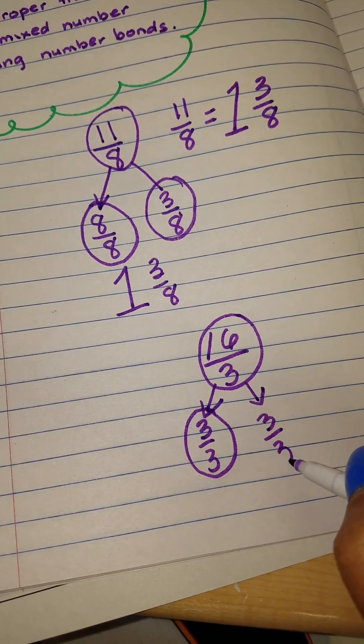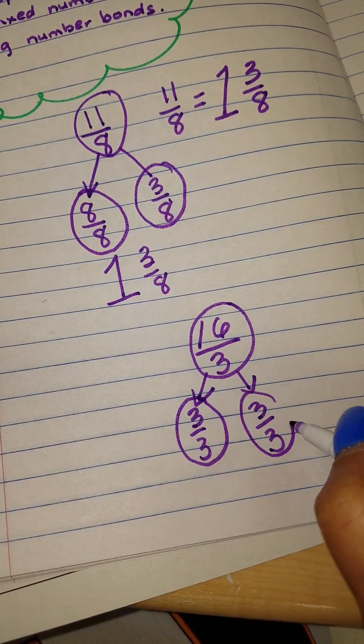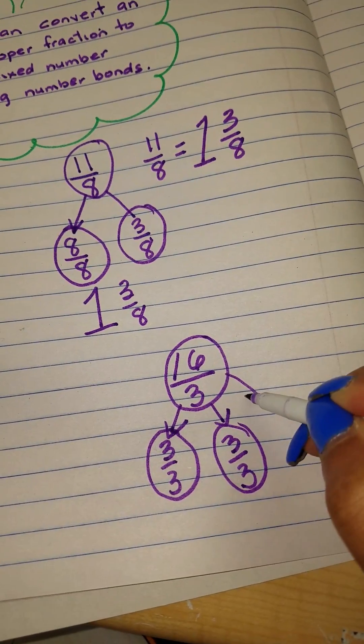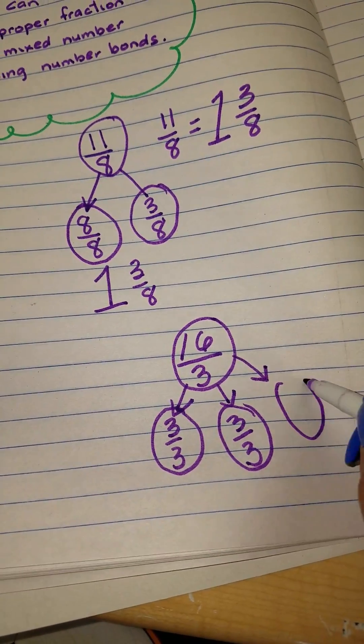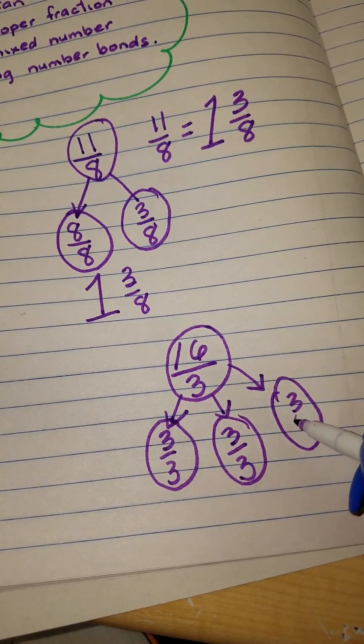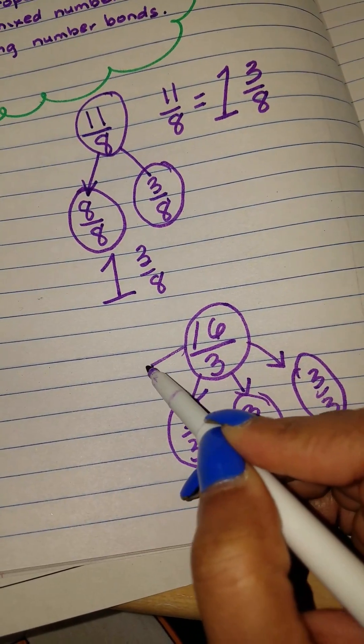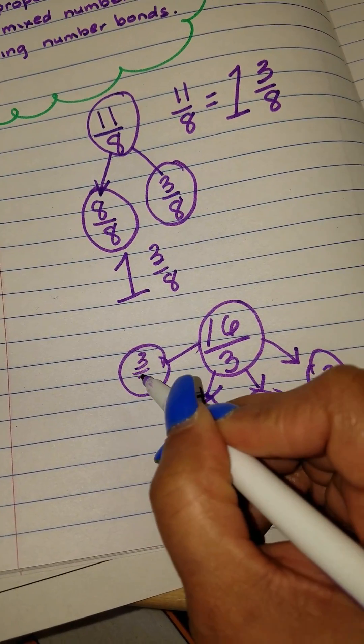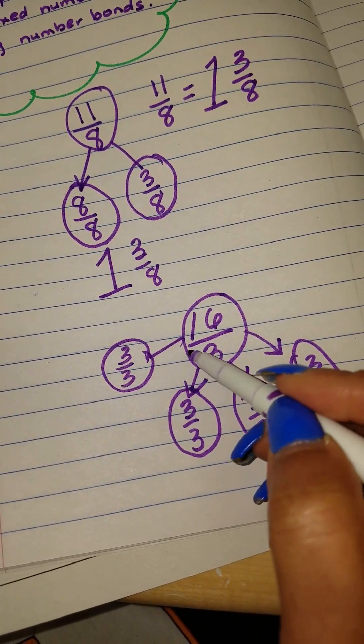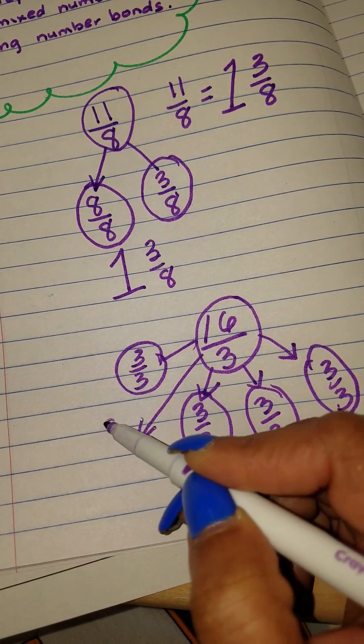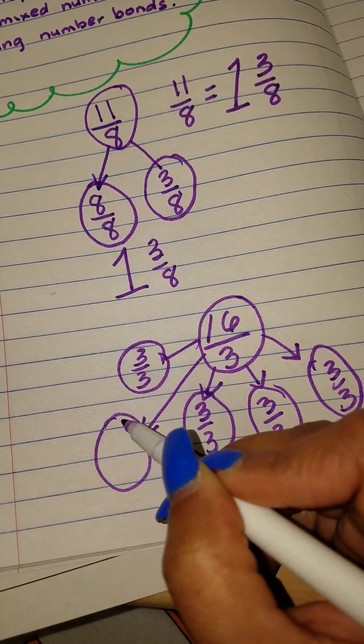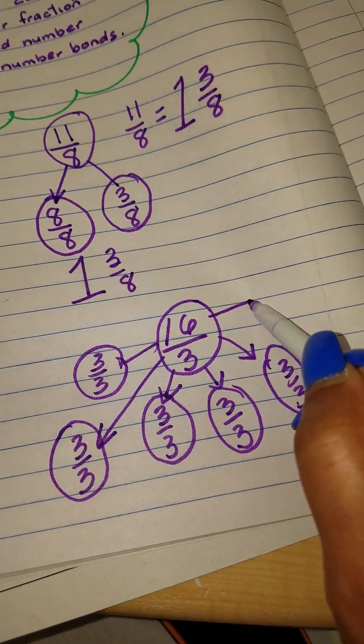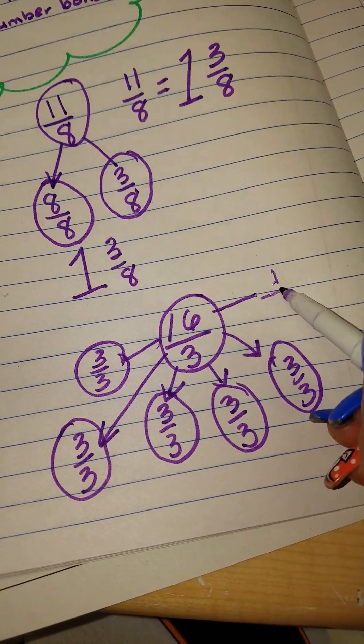3 thirds, because we're trying to tally up or count up until we get to 16. So that's 3, 6, 9, 12, 15. And then we'll only have one more left, which will give us a fraction of 1 third.